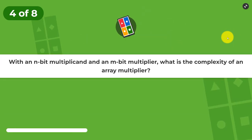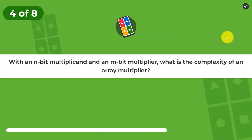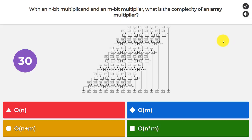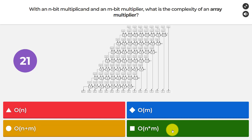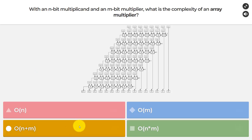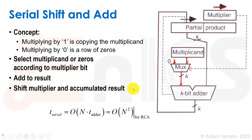Question number four: with an n-bit multiplicand and an n-bit multiplier, what is the complexity of an array multiplier? Looking at the array multiplier picture, is it O(n), O(m), O(n plus m), or O(n times m)? The answer is O(n plus m).